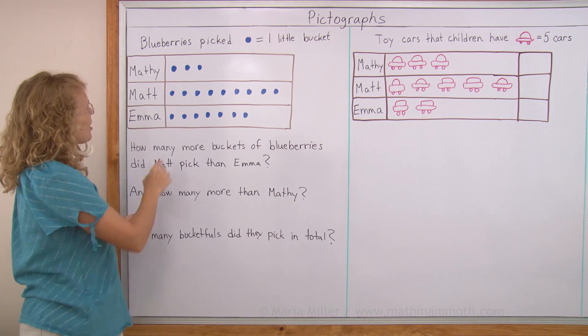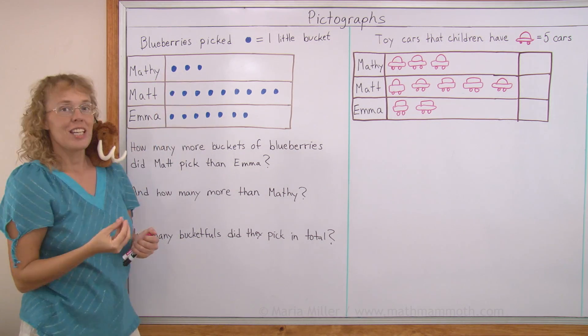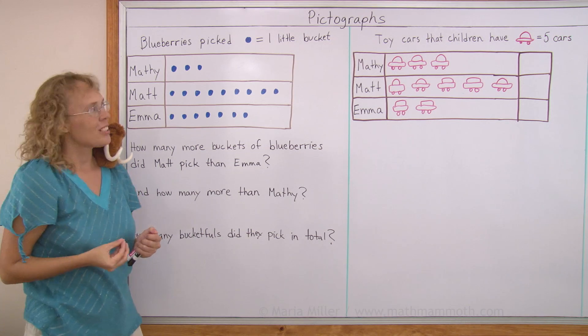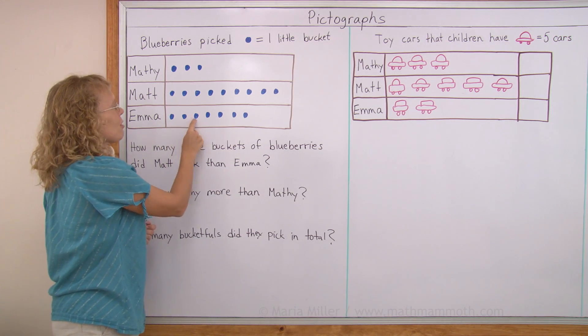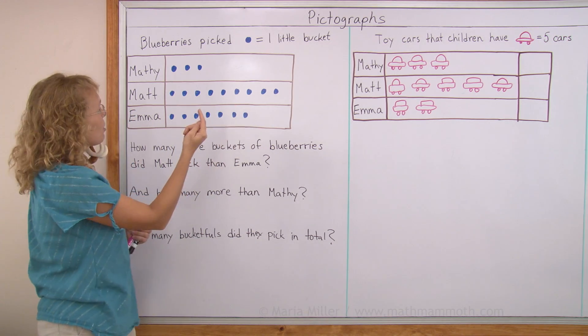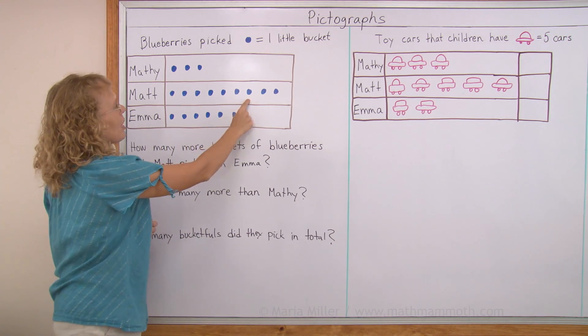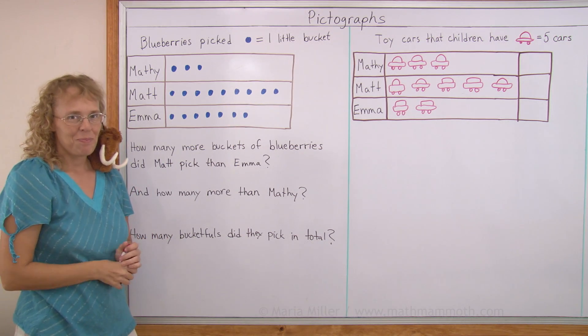For example, Mathie picked three bucketfuls. And then Emma picked one, two, three, four, five, six, seven bucketfuls, and Matt picked nine bucketfuls of blueberries.